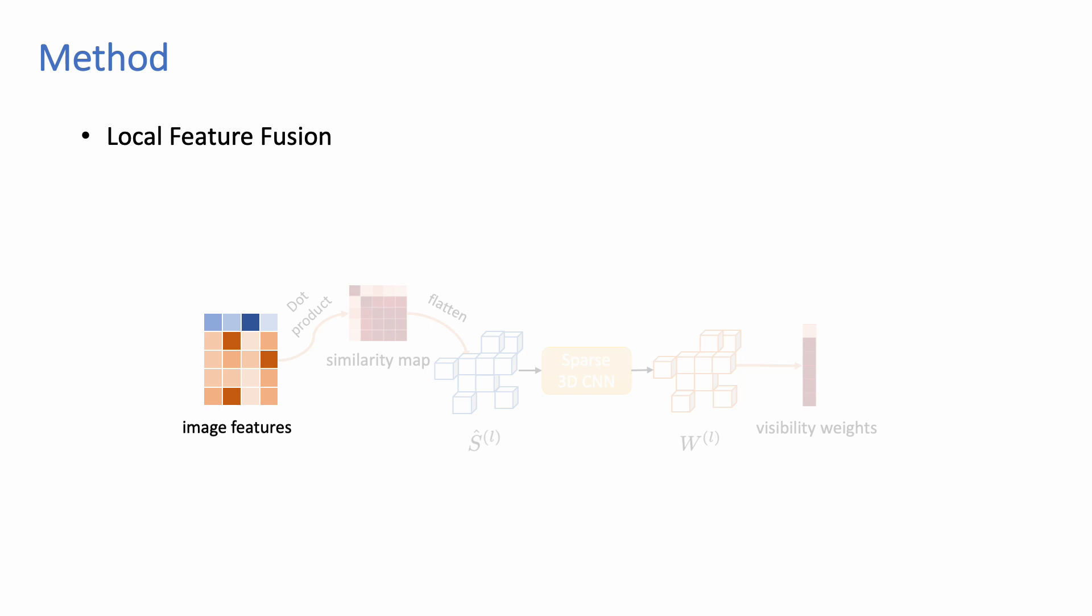Specifically, in the local feature fusion module, for each voxel, given the features extracted from different views, we first compute their pairwise cosine similarities to get the similarity map, and then use the 3D convolutional neural network to produce the visibility weights.